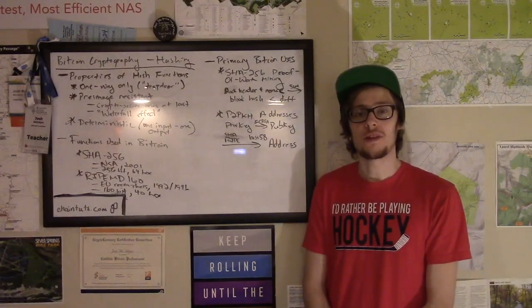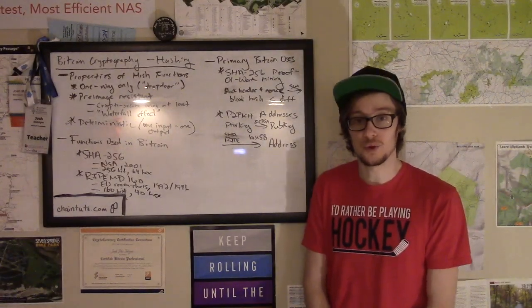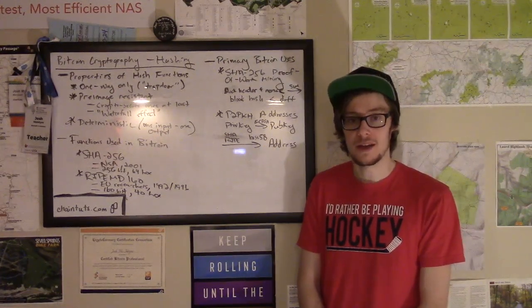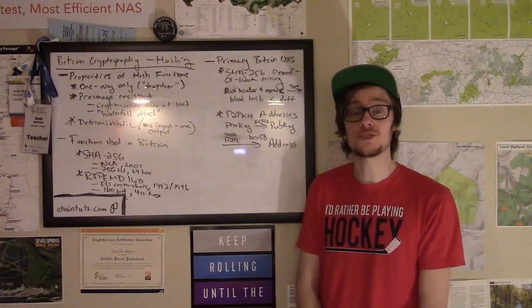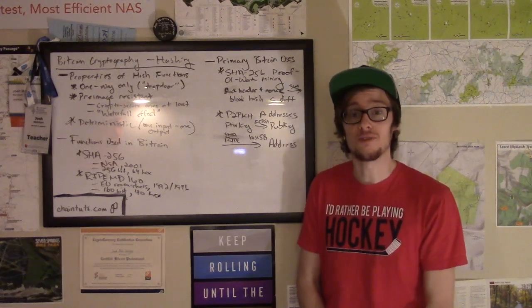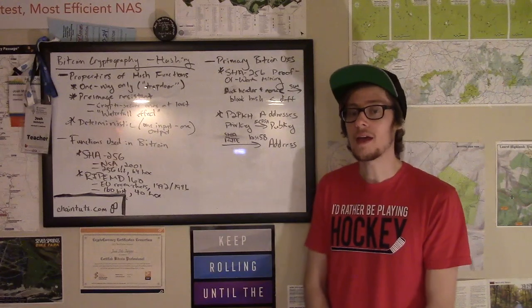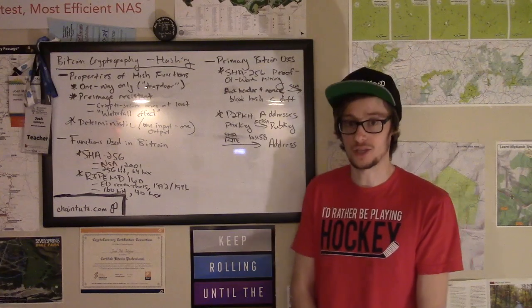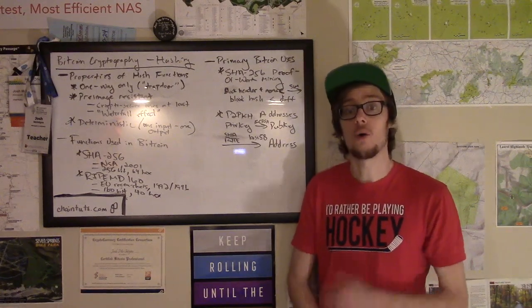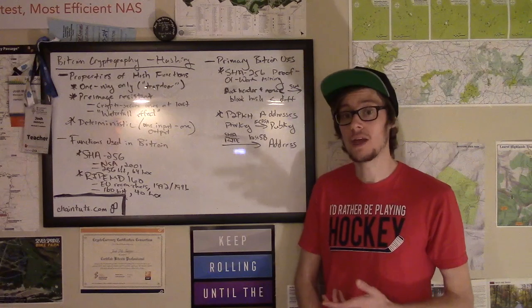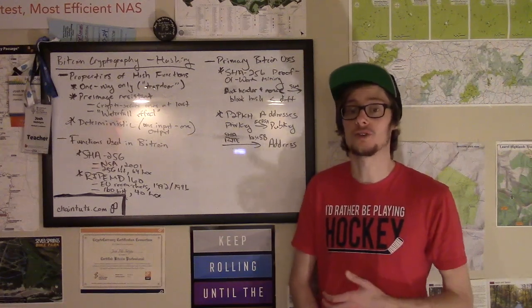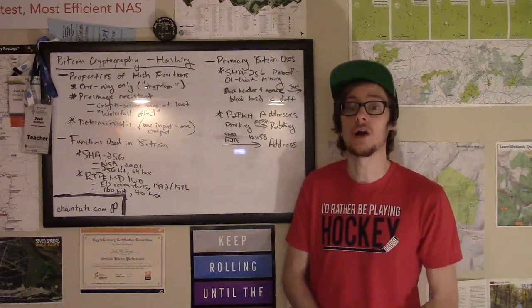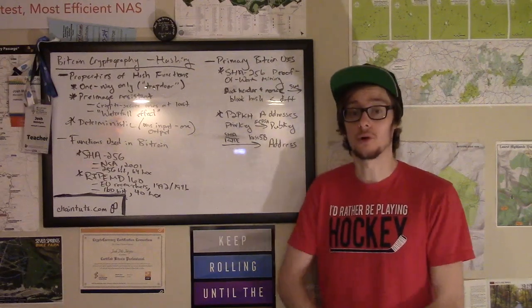Hey everyone, this is Josh with another Bitcoin and blockchain tutorial available at ChainTuts.com. Today we're going to be talking about an interesting technical topic, some of the cryptography that's used in Bitcoin. In particular, we're going to be talking about cryptographically secure hash functions. We're going to talk about what some of the important properties of hashes are, what particular hash functions are most used in Bitcoin, and what some of the applications of hashing are in Bitcoin and other cryptocurrency systems.